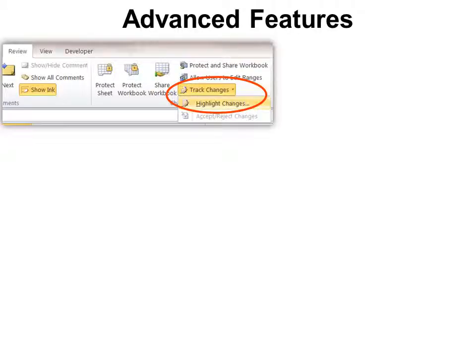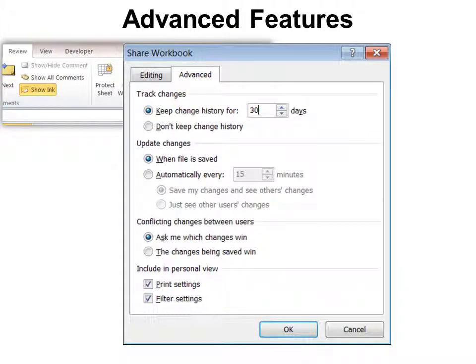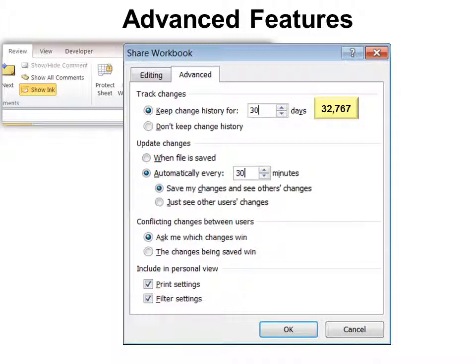To find advanced features, click Track Changes, Highlight Changes, and make sure you're on the Advanced tab. You can keep the change history for 30 days or 32,767 minutes. You can update changes when the file is saved or automatically every so many minutes — anywhere from 5 to 1,440 minutes.